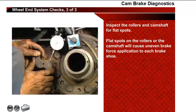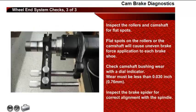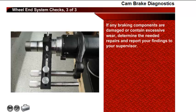Continue the wheel end system checks by inspecting the rollers and camshaft for flat spots. Upon brake application, the rollers must roll on the camshaft head and in the brake shoe web recesses. Flat spots on the rollers or the camshaft will cause uneven brake force application to each brake shoe, causing brake problems. Remove the brake shoes and check camshaft bushing wear. Using a dial indicator, verify the cam to bushing wear is 30 thousandths of an inch (0.76 mm) or less. Using a spider alignment tool, inspect the brake spider for correct alignment within the spindle — the spider must be perpendicular to the spindle for correct brake mechanical geometry. If any braking components are damaged or contain excessive wear, determine the needed repairs and report your findings to your supervisor.